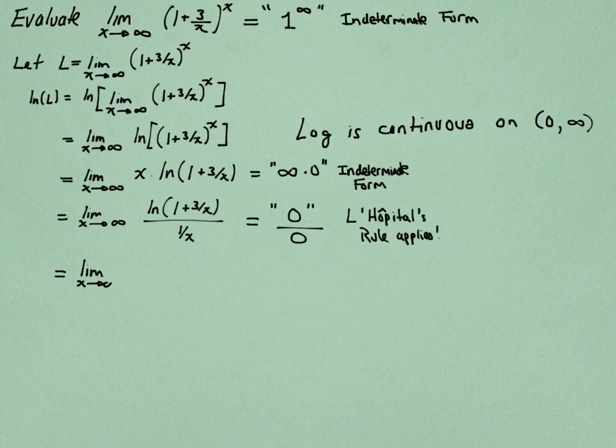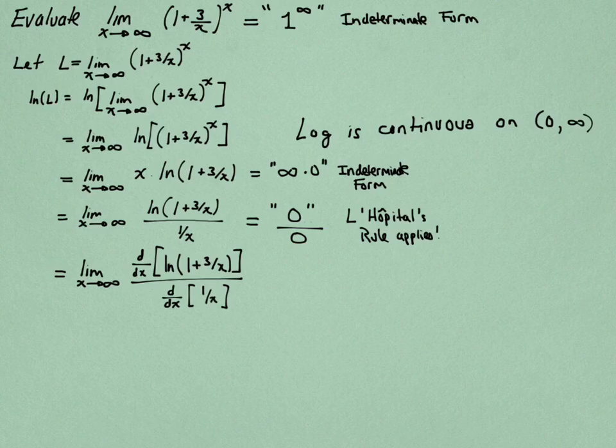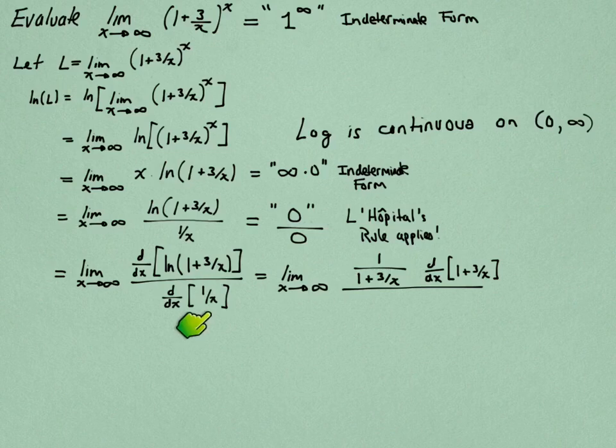Let's carry that out now. L'Hôpital says that I should take the derivative of the numerator and divide by the derivative of the denominator. In the numerator, I need to use the chain rule. So it's going to be 1 over the expression inside the logarithm times the derivative of that expression 1 plus 3 over x. In the denominator, I'm differentiating x to the minus 1. So using the power rule, this will be minus 1 over x squared.